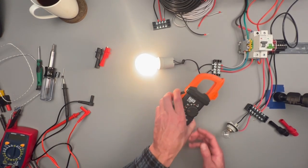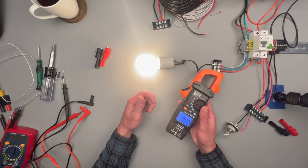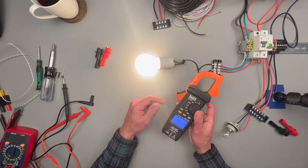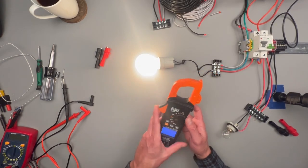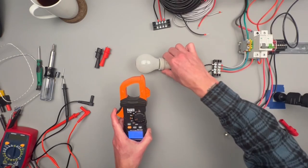There's no zero function for the amp clamp. It self-zeros. I think the amp clamp function of this meter is pretty bulletproof. It's nice to see that it works so well.